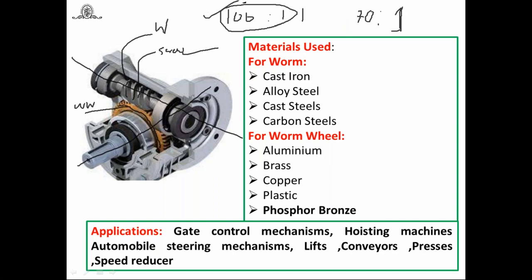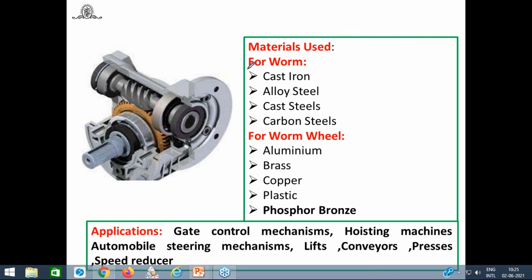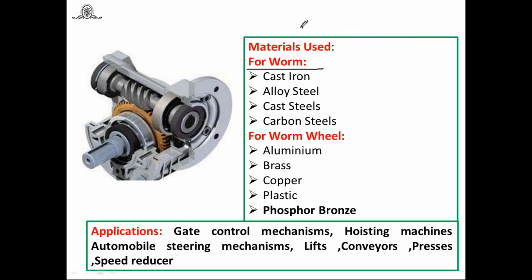In specific conditions, when the input shaft runs at 100 rpm you can get output speed of 1 rpm — a 100 to 1 reduction — but in actual practice the maximum is up to 70 to 1 in one stage. More than 25 to 1 can also be achieved in a single reduction.